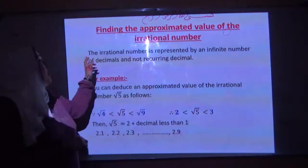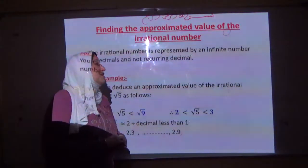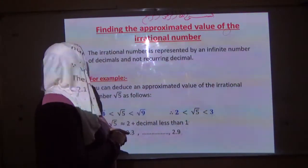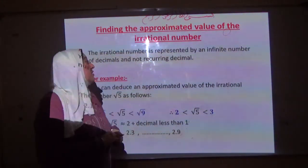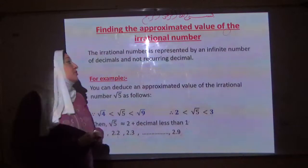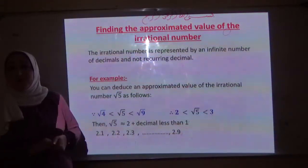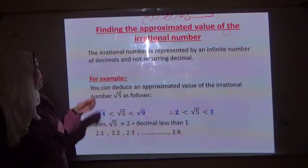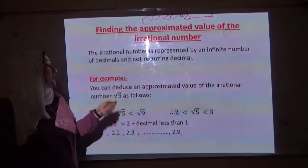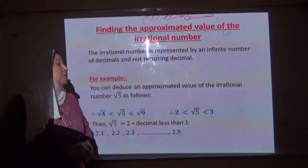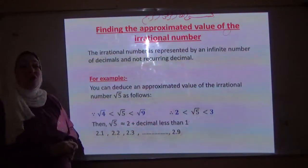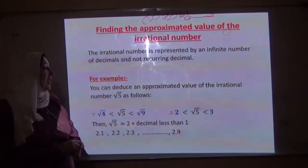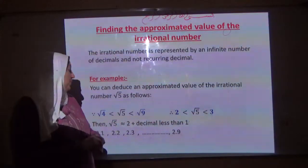The irrational number is represented by an infinite number of decimals — not recurring decimals. For example, we can deduce an approximated value of the irrational number square root 5.